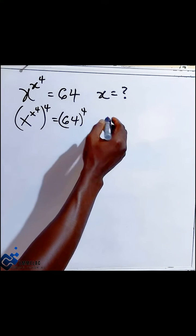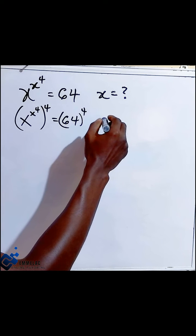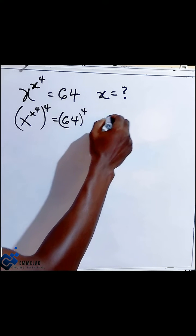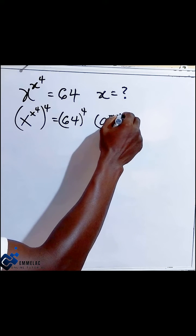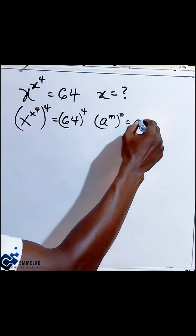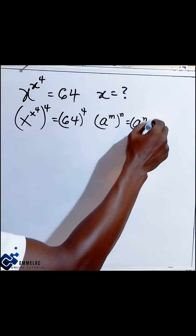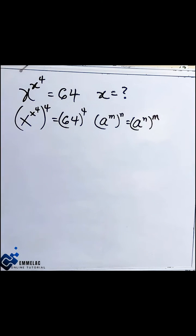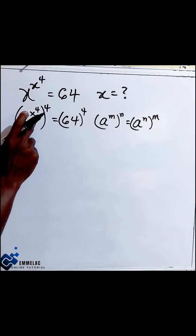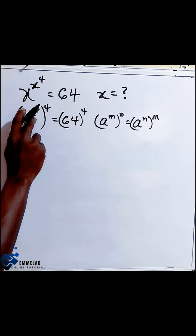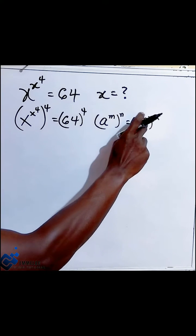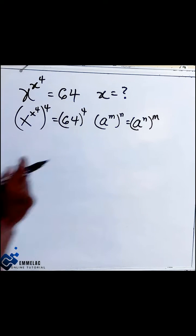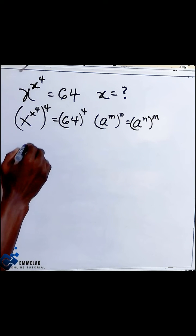Now let us recall according to the law of indices that a raised to the power of m raised to the power of n can also be rewritten as a raised to the power of n, r raised to the power of m. Now in this case, let's represent this as n and 4 as m, which means it can be interchanged.